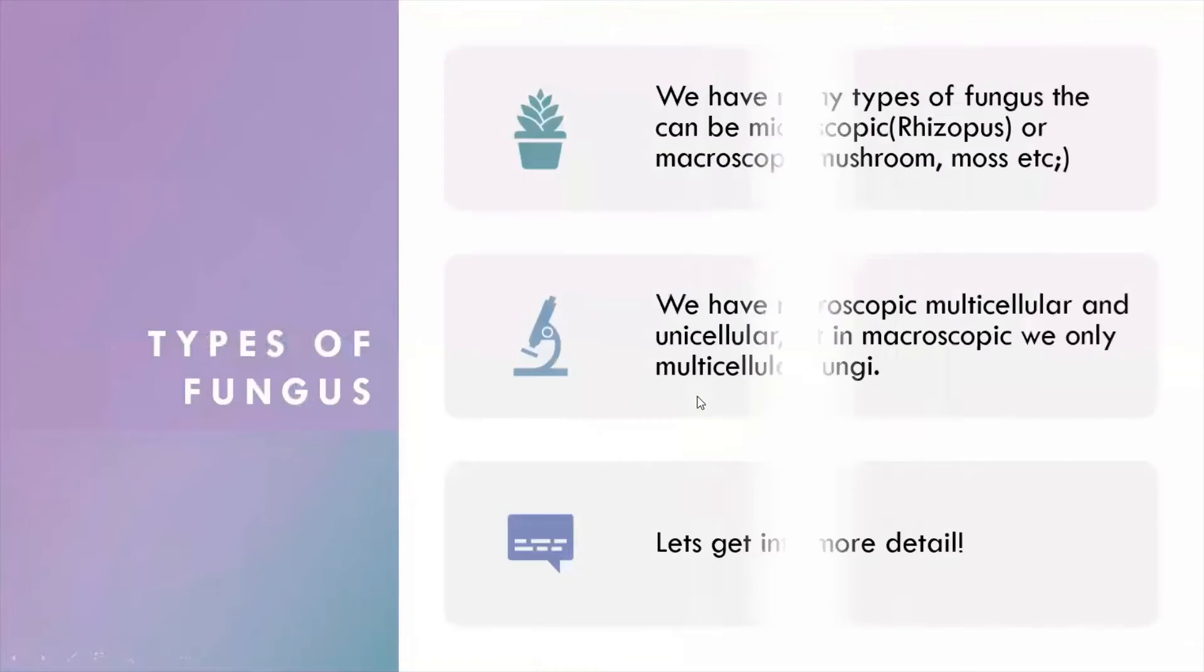On the list you have types of fungus. You have many types of fungus. They can either be microscopic or macroscopic. Microscopic ones are rhizopus, basically bread mold, and macroscopic is like big things you can see with naked eyes like mushroom and moss.